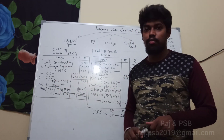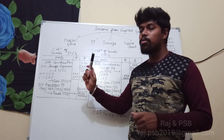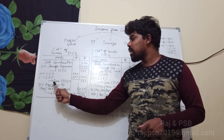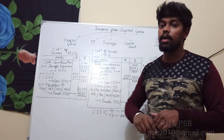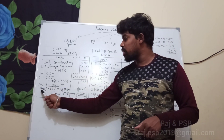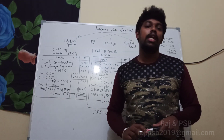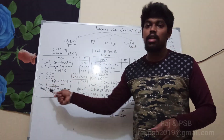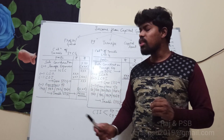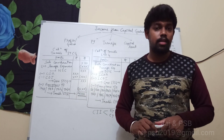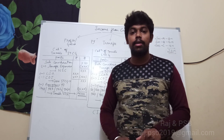After deducting both cost of acquisition and cost of improvement, we get the gross short-term capital gains. From the gross amount, we deduct exemptions available under the Income Tax Act — specifically under sections 54B, 54D, 54G, and 54GA. The final amount is called the taxable short-term capital gains.